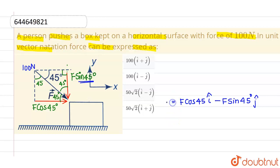So this is F vector. Now we also know that the magnitude of F is 100, so this will be 100 times cos 45 degree which is 1 by root 2 i-cap, minus again F is 100 and sin 45 degree is again 1 by root 2 times j-cap.